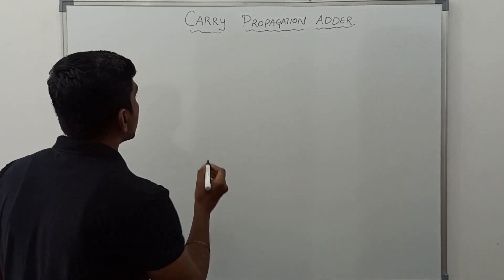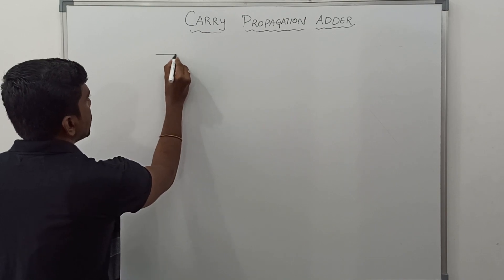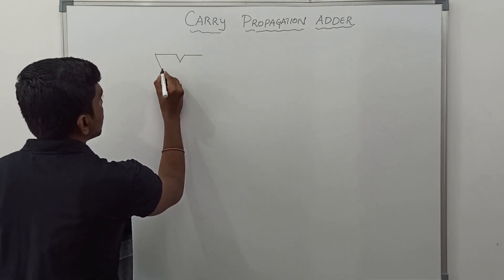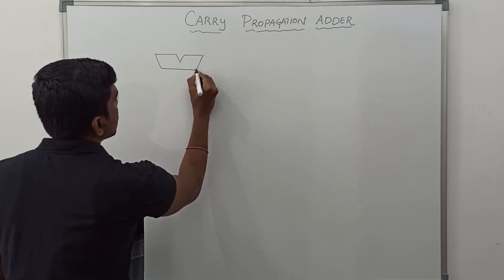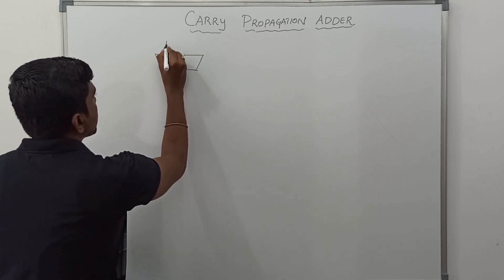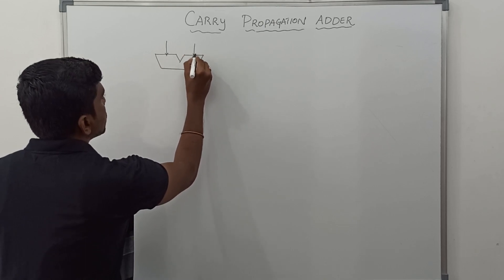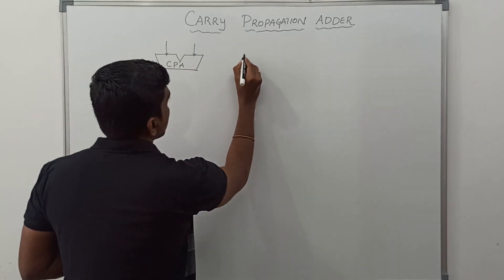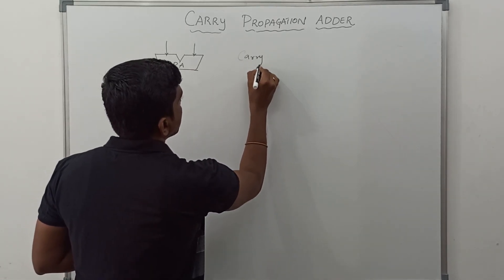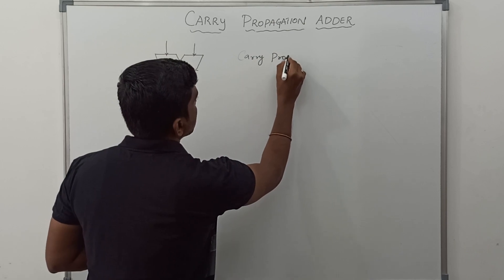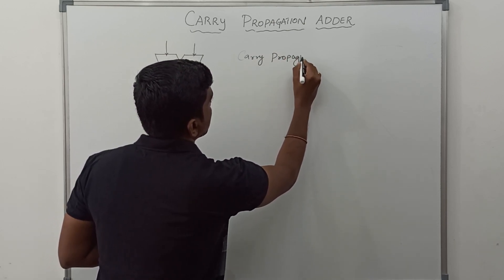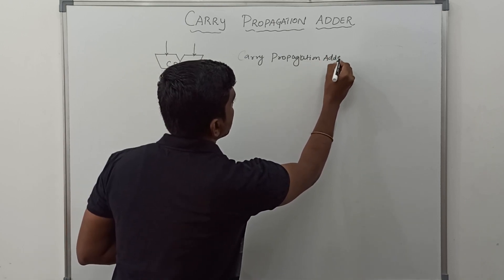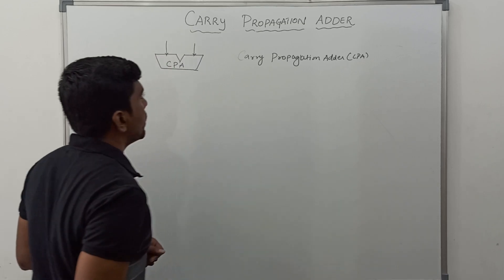Now first I will draw the structure of a carry propagation adder. It is a simple structure. I simply call it as CPA — CPA represents carry propagation adder.